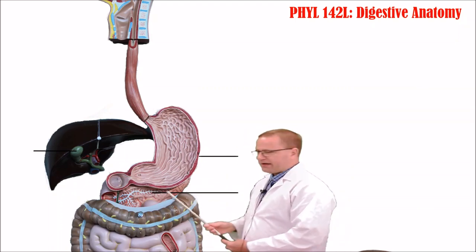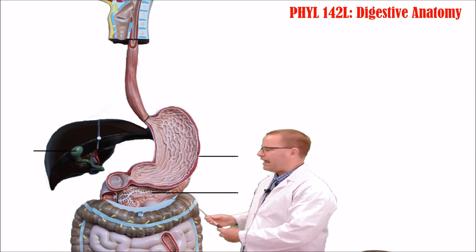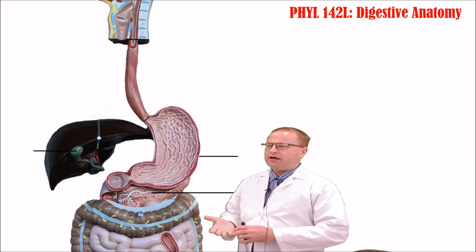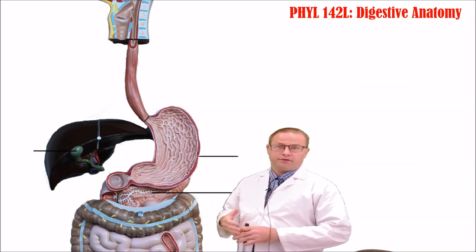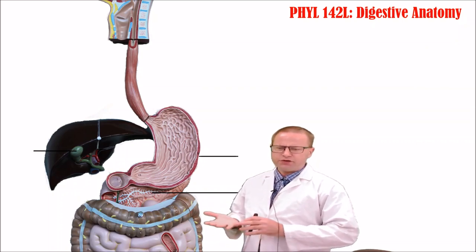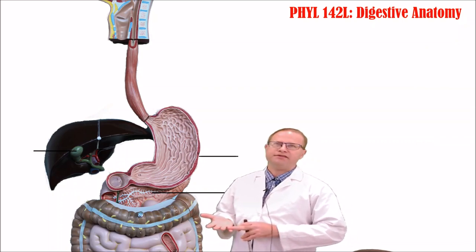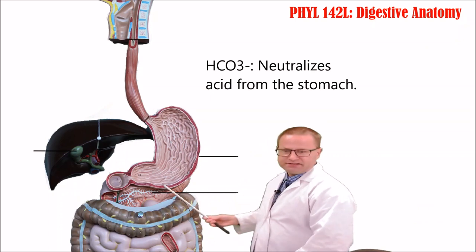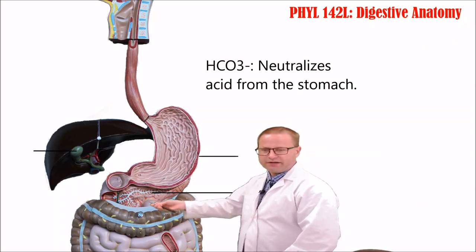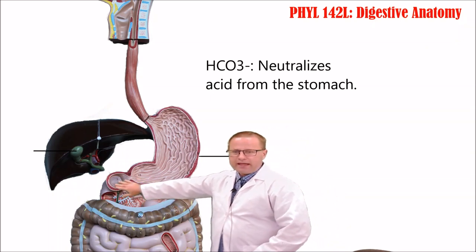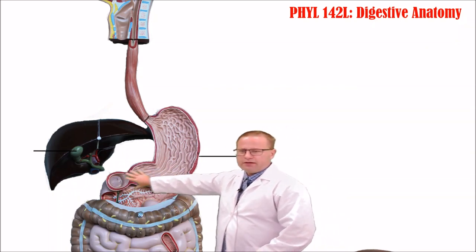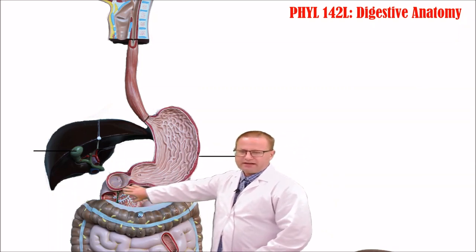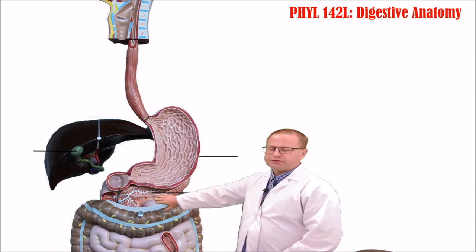Next we have the pancreas — a very important endocrine and exocrine organ that produces many different enzymes used in digestion, as well as the hormones insulin and glucagon. The key secretions of the pancreas are: first, bicarbonate — basically baking soda — which neutralizes the pH as stomach contents pass into the duodenum, shifting pH from around 2 in the stomach up to about 5 or 6 in the small intestine.